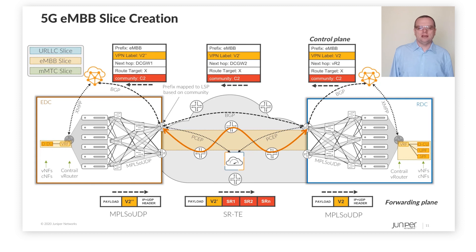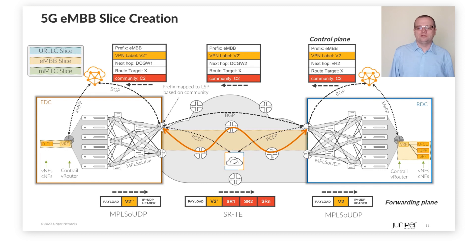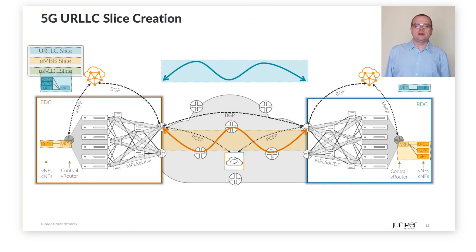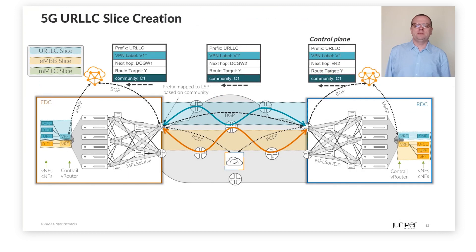Please note that the DC IP underlay is not slice-aware, given that the DC underlay is generously dimensioned and based on a spine-and-leaf physical topology. Thus, all paths between DC underlay nodes have equal latency and capacity. Therefore, slice-unaware MPLS-over-UDP tunnels can be used within DC underlay to simplify the overall solution. Creation of another slice — for example, URLLC — happens in a similar way.